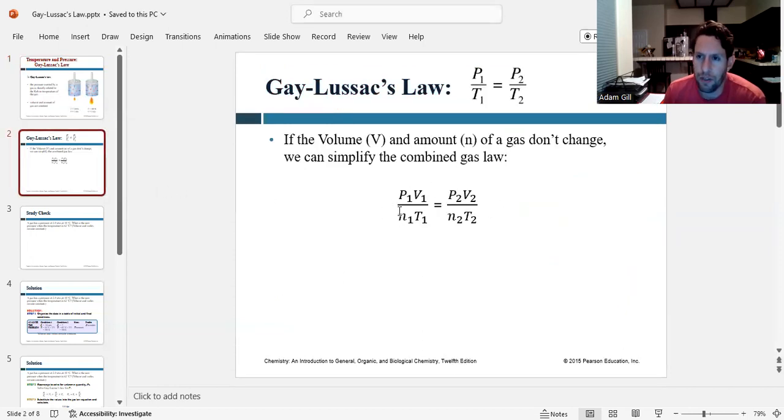If we're starting from the combined gas law once again, assuming volume and moles of a gas don't change, we can eliminate volume and moles. And so our expression simplifies to initial pressure over initial temperature equals final pressure over final temperature. And this is Gay-Lussac's Law.